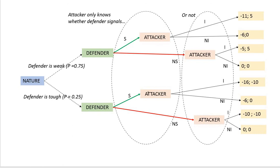If the defender is tough and signals, then if the attacker invades: attacker loses 10 and defender loses 16 — 10 due to invasion and 6 due to signaling. If attacker does not invade, defender loses 6 due to signaling. If the tough defender does not signal and attacker invades, both players lose 10. If attacker does not invade, payoffs are 0.